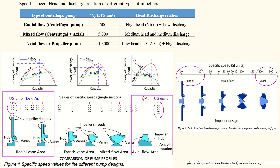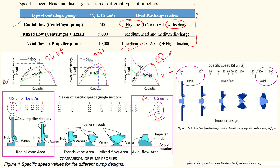For axial flow: pump head is low, discharge Q is very high, and specific speed is the highest. For radial flow: discharge is low, head is high, and specific speed is very low — around 10 in some references, up to 300 in metric or 15,000 in FPS. For mixed flow: discharge is medium and head is medium. Higher specific speed means very high discharge and low head. Please review these carefully to avoid confusion between unit systems.